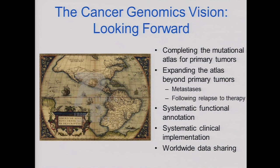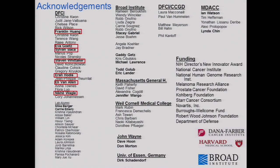Sometimes in these meetings we take a historical look at how much has been accomplished, and it can feel like maybe this is all done. But we are only just getting started. The atlas looks like a 16th or 17th century map — we knew there was a new world but didn't have any detail. We need to get more detail by completing the mutational atlas, expanding across disease, metastasis, and relapse to therapy; we need to annotate the genome and understand mechanistically how alterations contribute to cancer; and we need systematic clinical implementation to test the utility. The ability to share data worldwide will be an important issue. Thank you.